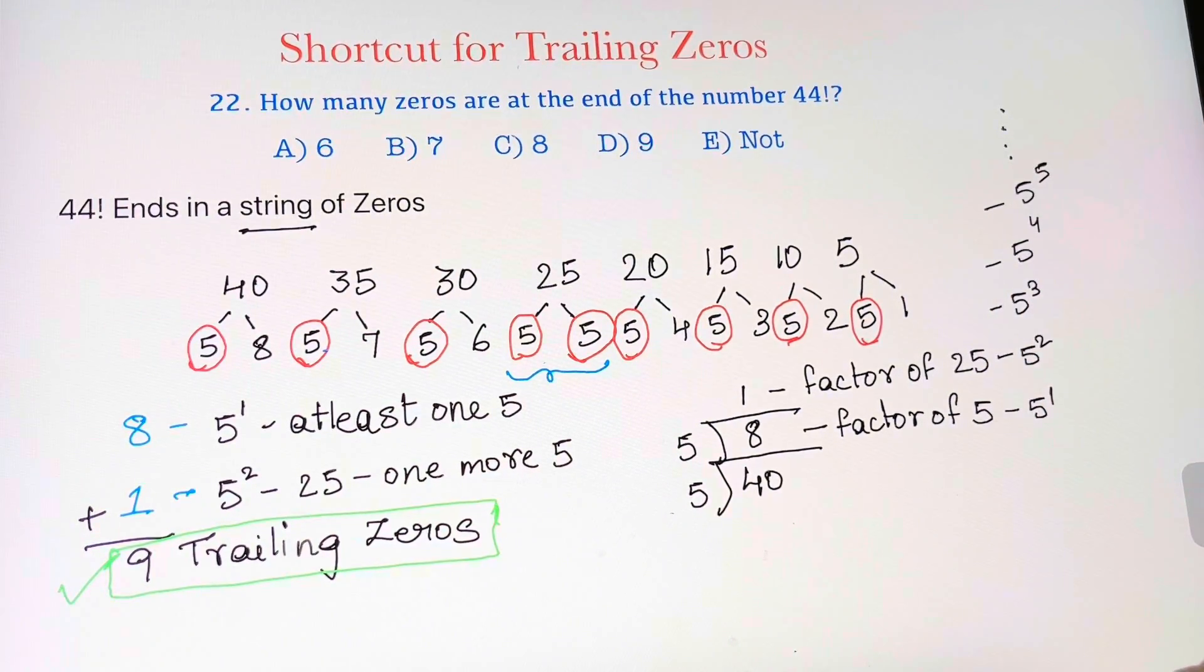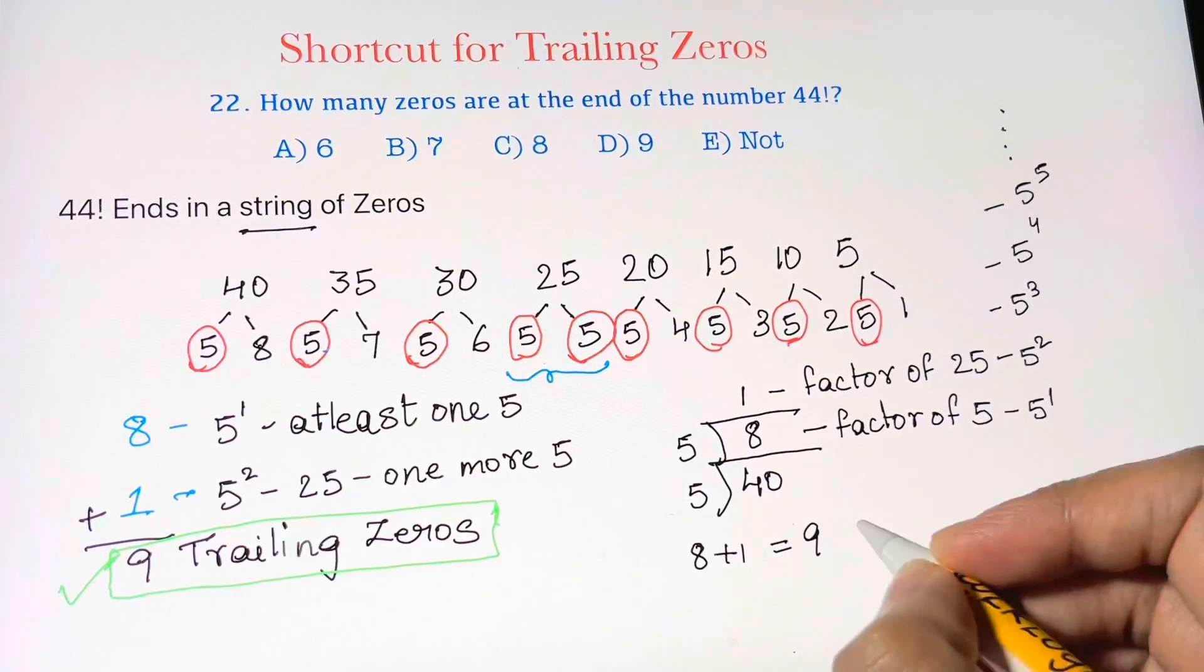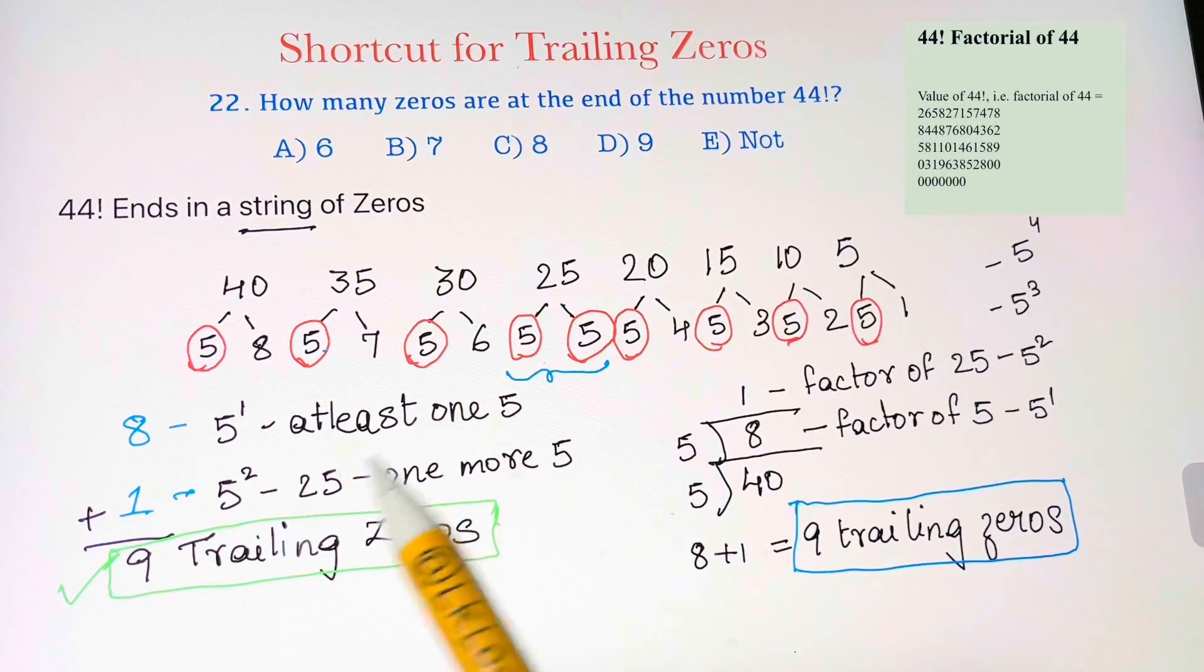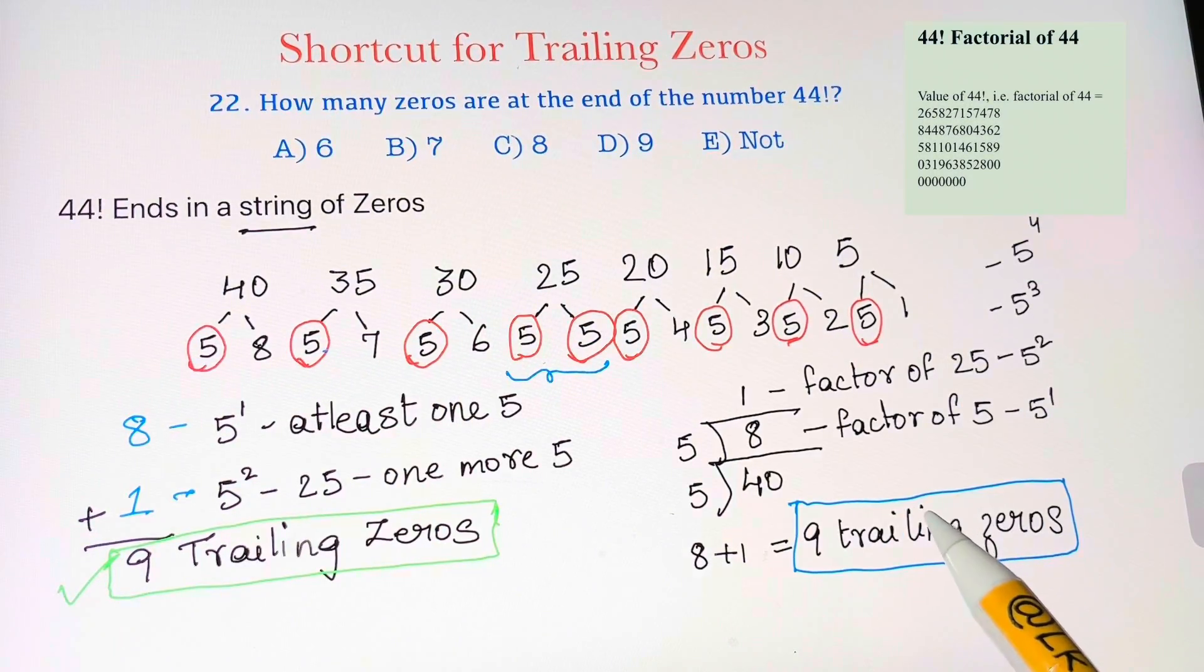This is 5 to the 1, then 5 squared, then 5 cubed, and 5 to the 4, and so on. What's important to do is just add those two numbers. So 8 plus 1 equals 9, so there are 9 trailing zeros. That's much shorter than having to write everything out. So this is the shortcut to find the number of trailing zeros in a factorial problem.